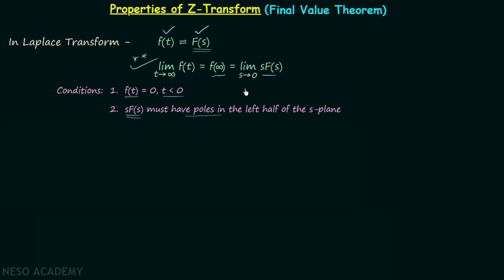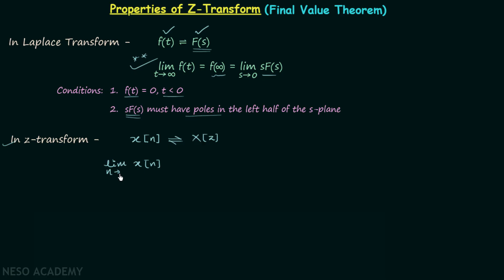Now we will move on to the final value theorem in Z-transform. Let's say we have a discrete time signal X(n) with the corresponding Z-transform X(Z). Then the final value of X(n), which is limit n tending to infinity of X(n), or X(∞), is equal to limit Z tending to 1 of (1 - Z⁻¹) multiplied by X(Z). This is known as the final value theorem in Z-transform.